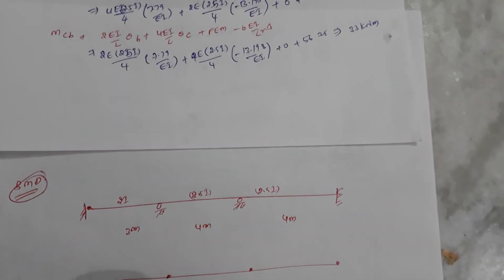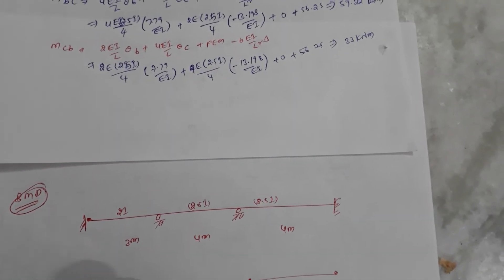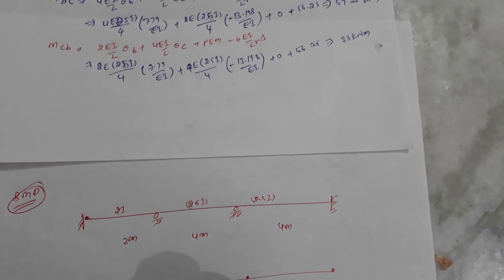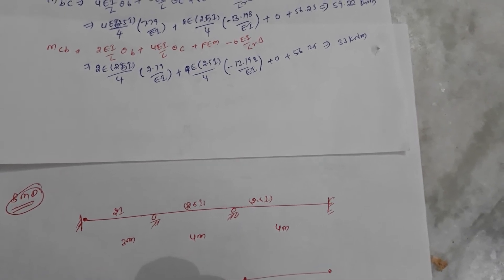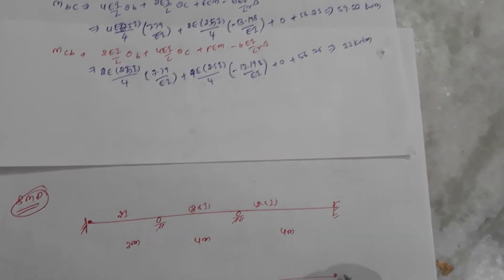With the fixed support here and the calculated internal moments, we can now draw the bending moment diagram. The moments are: minus 69, minus 69 at one end, then 59, then 33, and finally minus 33 and minus 16.